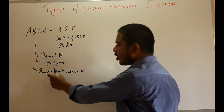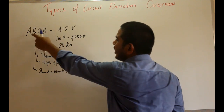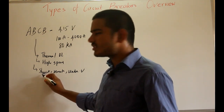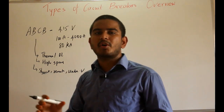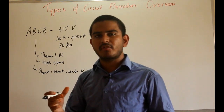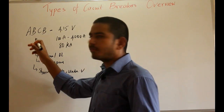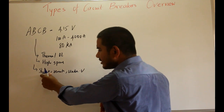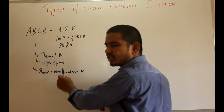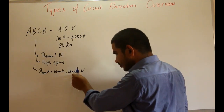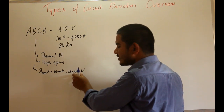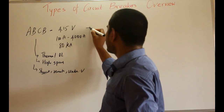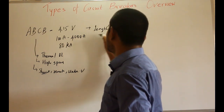Optional accessories present in the air break circuit breaker include shunt trip, remote trip, and under voltage release. The shunt trip is an optional device where you must provide power externally to the shunt trip terminals to trip the breaker — it cannot work with the breaker's own power. Remote trip allows tripping from a remote area, and under voltage release trips when voltage falls below a threshold.